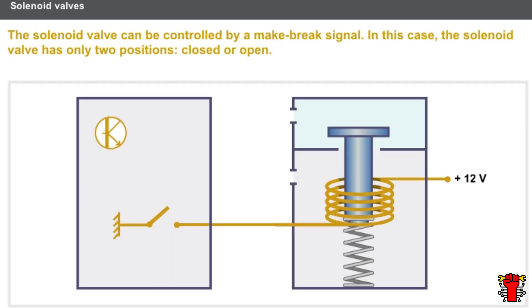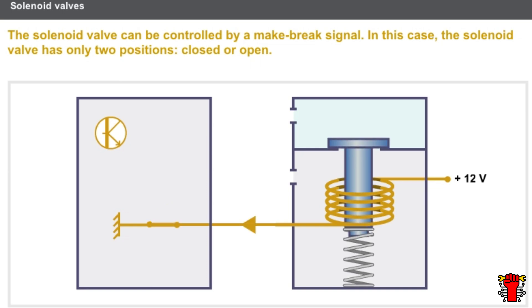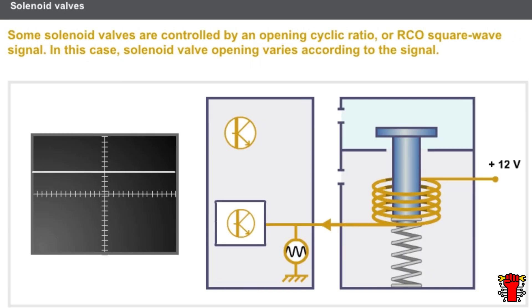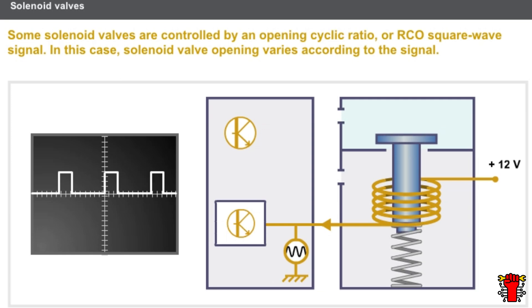There are two ways of controlling the solenoid valve. The solenoid valve can be controlled by a make-brake signal. In this case, the solenoid valve has only two positions: closed or open. The solenoid valve can also be controlled by an opening cyclic ratio, or RCO, square wave signal. In this case, solenoid valve opening varies according to the signal.